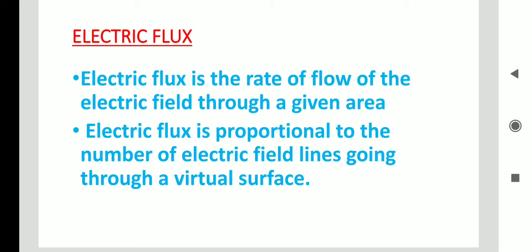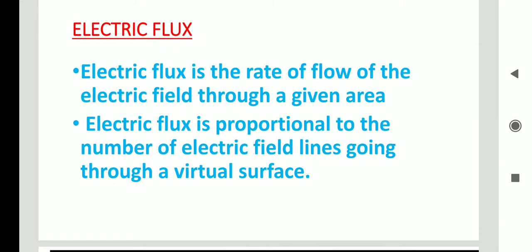Let me share the previous session topics once again. Electrostatics is the subject or science dealing about rest charges or stationary charges. Charge is a particular property of an object. A conductor is an object which carries electrical charge — examples are metals. An insulator is an object which does not carry electric charge — examples are rubber, wood, and plastic.